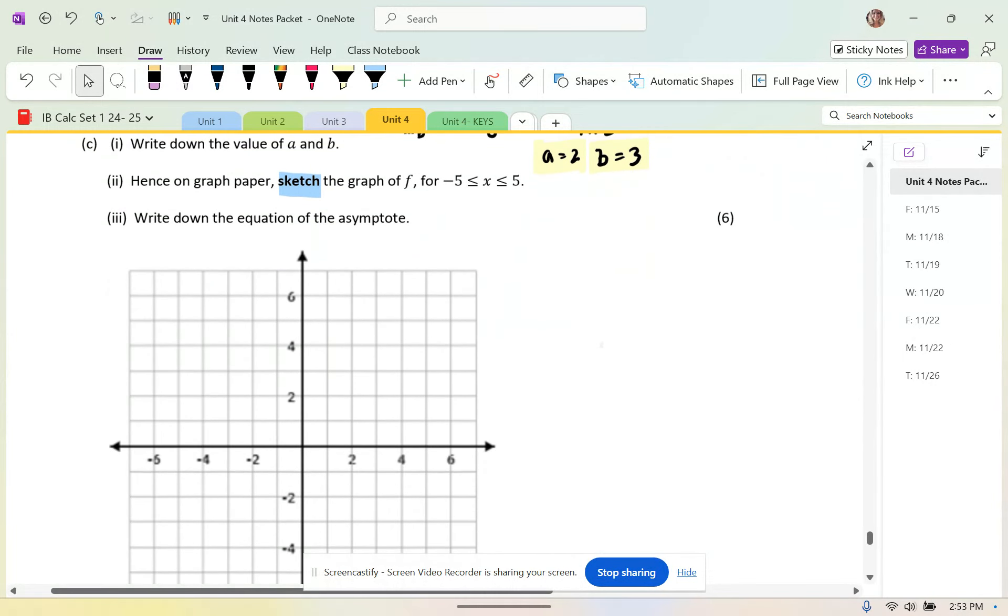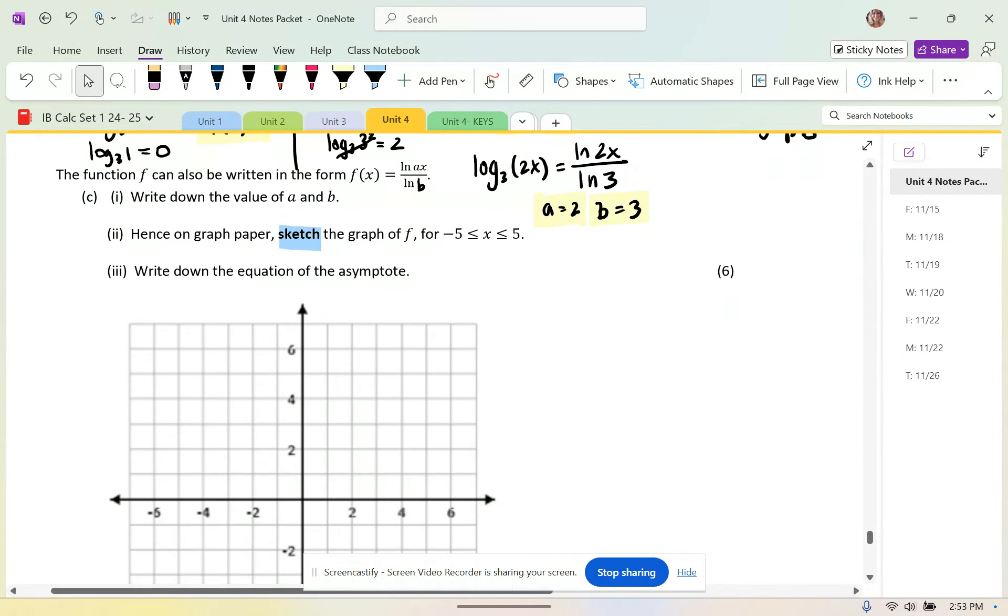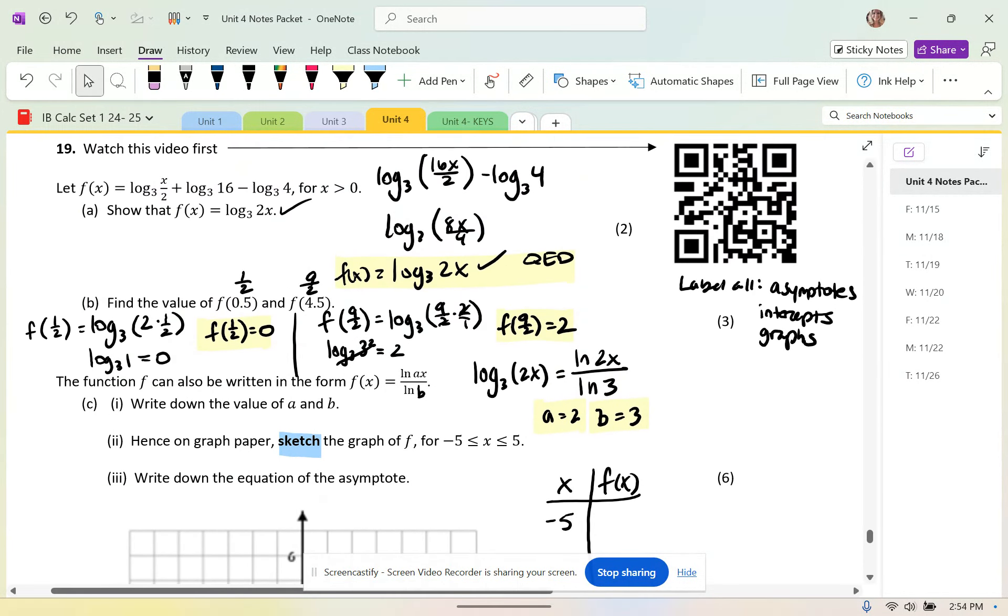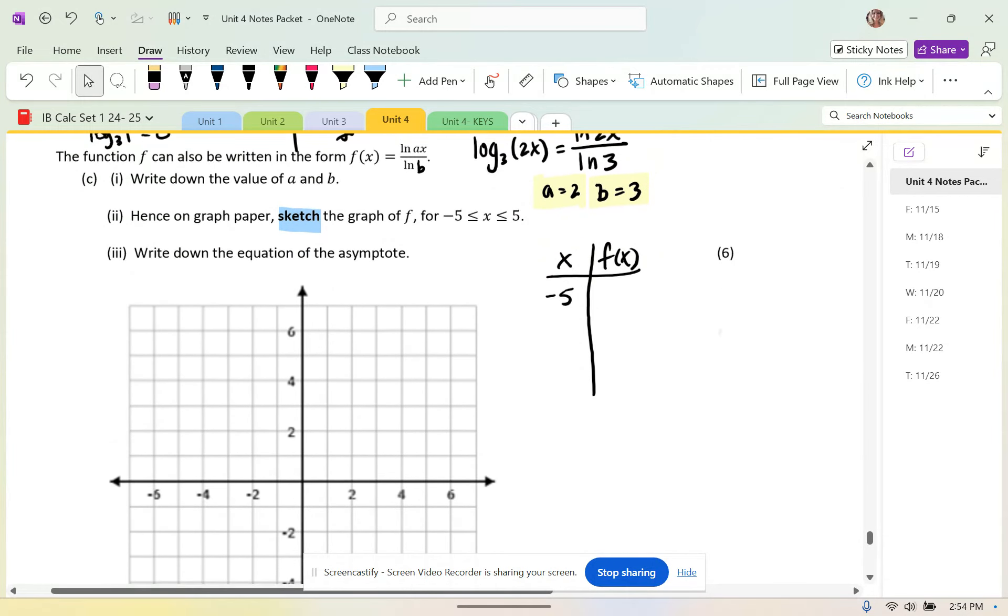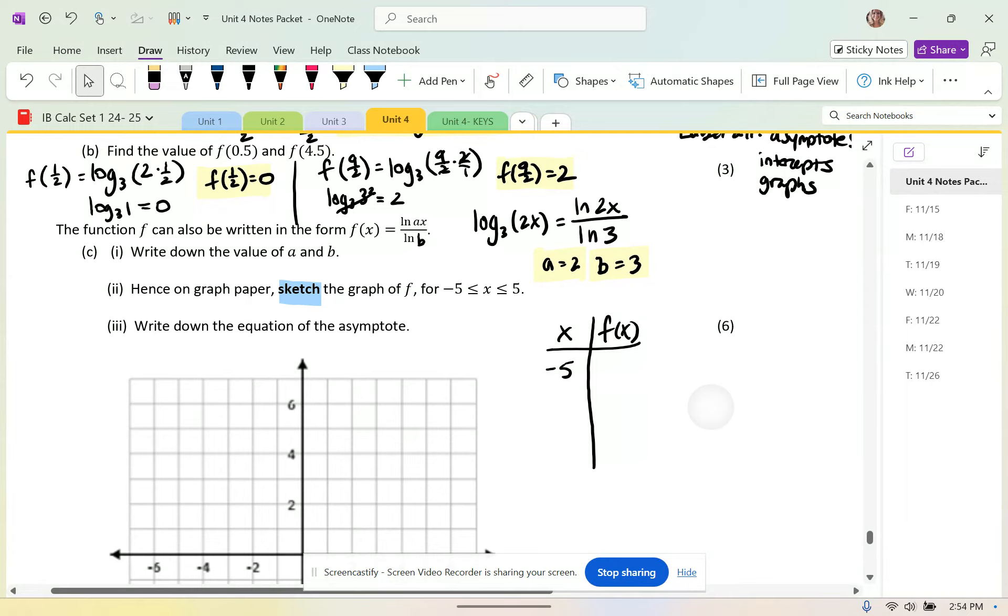It says, hence on graph paper, sketch the graph of f from negative 5 to 5. So I have x and f of x. I want to see what's happening at negative 5. Do I have any points from up top here that I can check out? Oh, I have 1 half at 9 over 2. So I will do that.